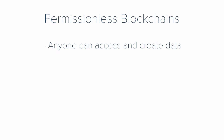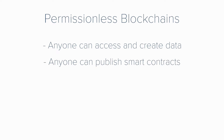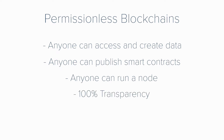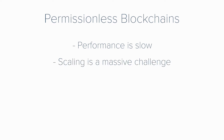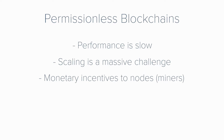Permissionless blockchains: anyone can access and create data. Anyone can create and publish smart contracts. Anyone can run a node. They are 100% transparent, so you can read everything. There's a relatively high level of anonymity. Performance is slow. Scaling is a massive challenge. There are monetary incentives for those running nodes. And because of the nature of the proof-of-work consensus algorithm, permissionless blockchains use an incredible amount of energy.